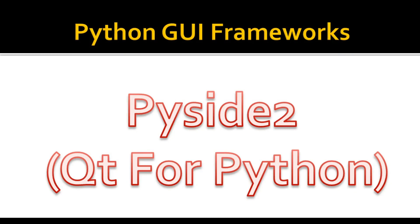Another GUI framework is PySide2, also called Qt for Python. Qt for Python offers the official Python bindings for Qt, enabling the use of its APIs in Python applications, along with a binding generator tool called Shiboken2 which can expose C++ projects to Python. Qt for Python is available under LGPLv3, GPLv3, and the Qt commercial license — if you want commercial use, you can purchase PySide2.